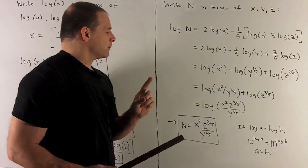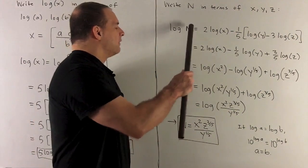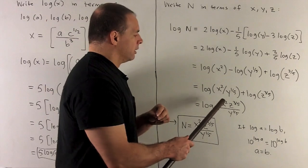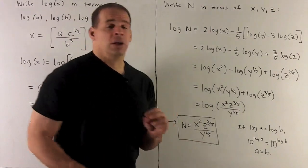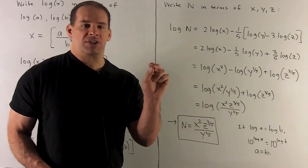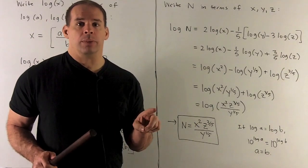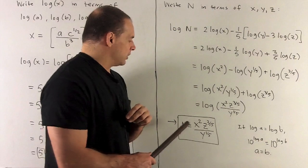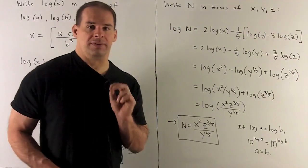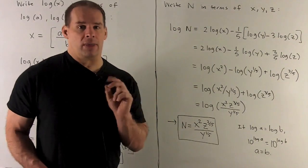So we wind up getting this. And now to finish, we just note I have log of N equal to log of our thing on the inside. If I have log of something equal to log of something else, the two things on the inside are going to be equal. So that means N is equal to X squared Z to the 3 fifths over Y to the 1 fifth.